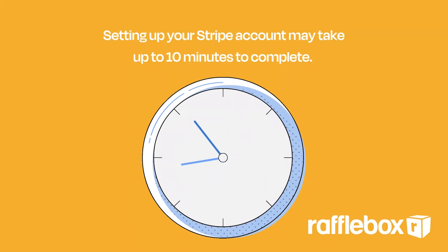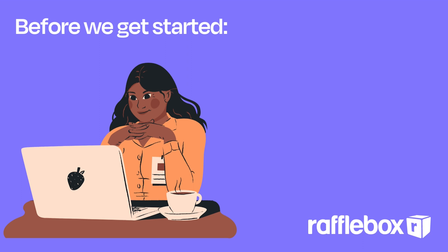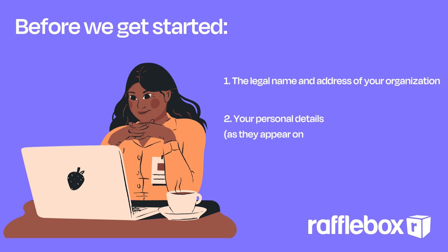Setting up your Stripe account may take up to 10 minutes to complete. Before we get started, you will want to make sure you have the proper information on hand. This information should be provided by someone authorized to sign on your organization's behalf. You will need the legal name and address of your organization, your personal details as they appear on your driver's license, and your organization's banking information.